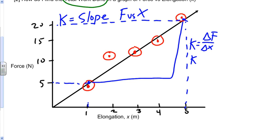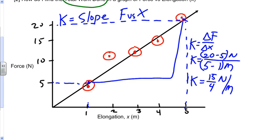So k equals 20 minus 5 newtons divided by 5 minus 1 meters. Going into the calculations, I get 15 over 4 newtons per meter. And there's my spring constant.